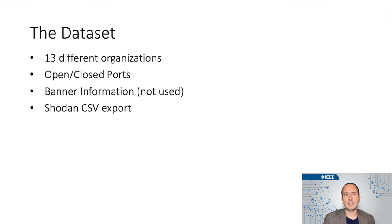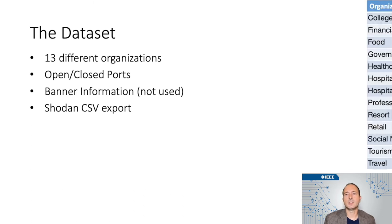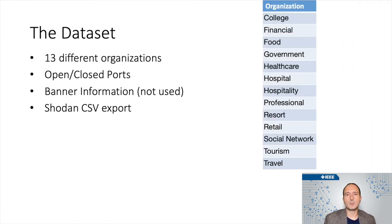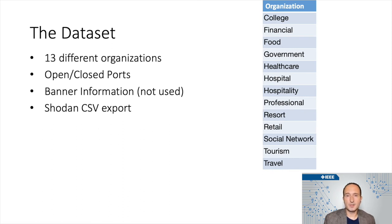I'm going to talk about the data set that we used. Thirteen different organizations, none of which represent current or former employers — they're just popular organizations we picked off the Shodan search engine. We changed the names because this information is all available if you want to query Shodan, but I don't want to imply that there are any vulnerabilities. We're just looking at the attack surface here. We collected open TCP ports, and Shodan is kind enough to give us a CSV export which includes a lot more information than we used — banner information, which we're going to get to in our future work.